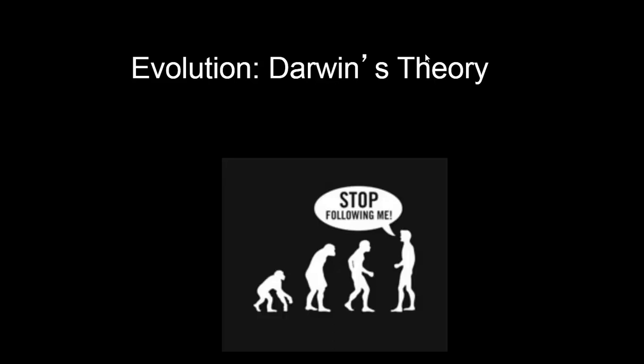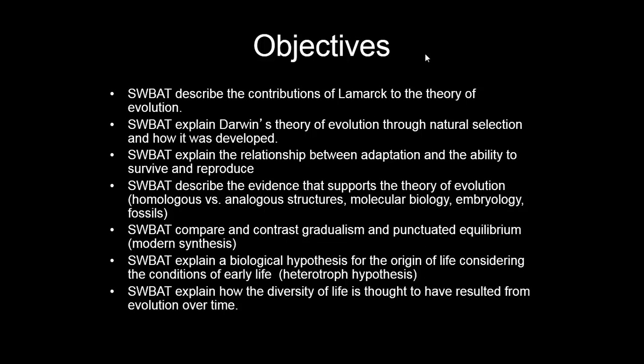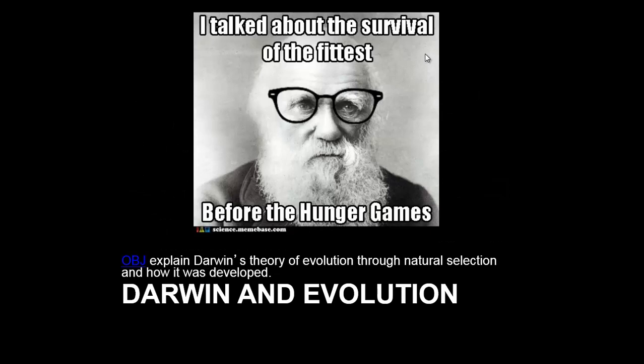So when we talk about evolution we think of Charles Darwin, who is the scientist who first published, along with others' input, a book that describes how evolution could work. There's our objectives — you can see those in the PowerPoint posted on the website if you'd like to take a closer look. So Charles Darwin — our objective is to explain the theory of evolution through natural selection and how it was developed.